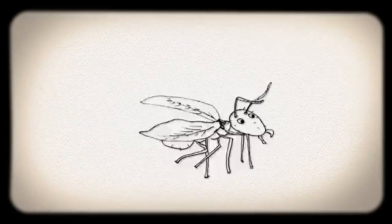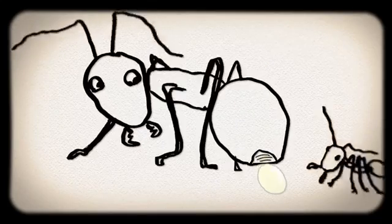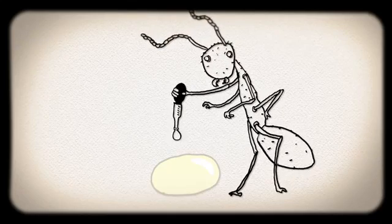The few that are successful settle down in a suitable spot, lose their wings, and begin laying eggs, selectively fertilizing some using stored sperm they've saved up from mating.